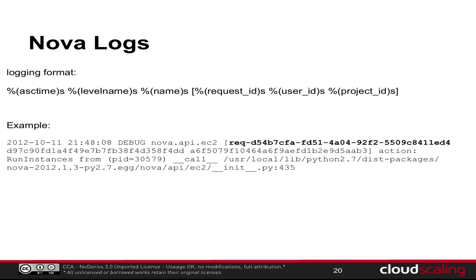Next in the log format you have user ID and project ID, which are straightforward. Then the log message — in the example shown, it's 'action: run_instances', the API command for launching instances. It also tells you exactly what file and line number generated the message, so if there's an error or stack trace you can go in and see exactly where it's running from.